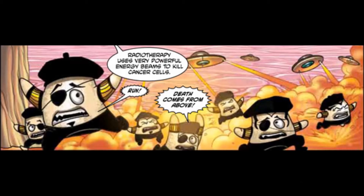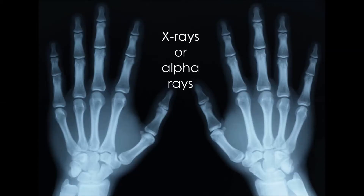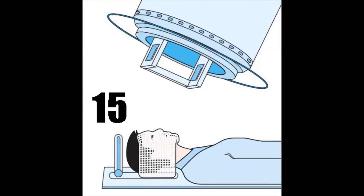Cobalt-60 replaces x-rays or alpha rays from radium by revealing inner structure, faults or foreign objects.